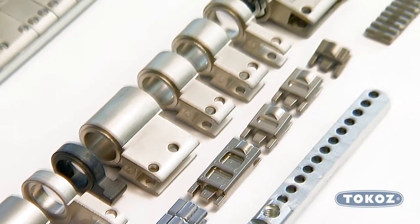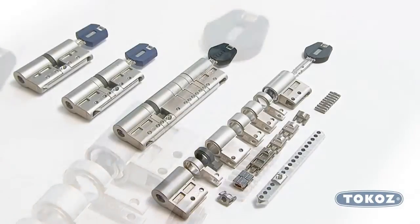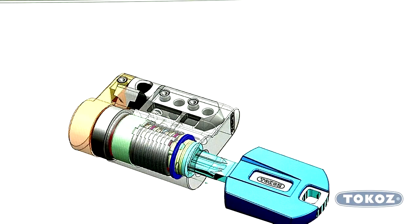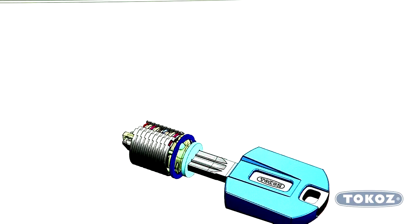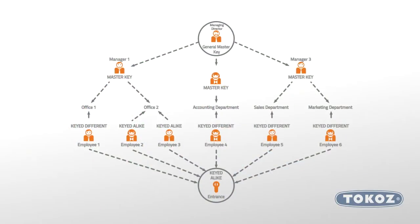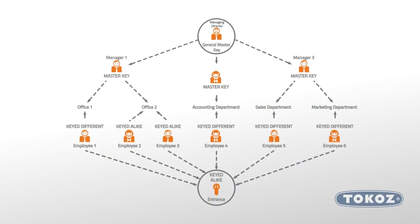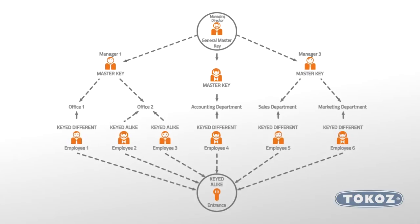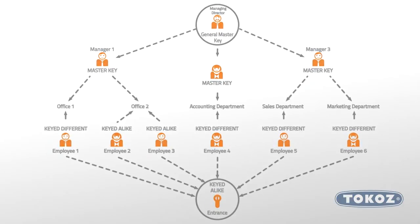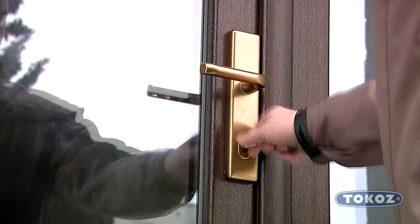The module type construction of the cylinders is rather exceptional on the market. Tokos offers it as standard in its Pro system. All Tokos Pro products are mutually compatible, which means you can use both keyed alike and master key systems. The purpose is to create a functioning system of master keys and keyed different cylinders, according to access rights, thus reducing the number of keys carried by each individual to a minimum.